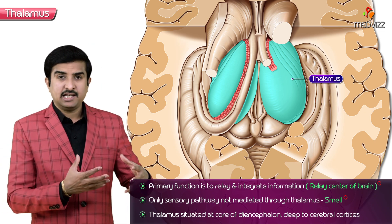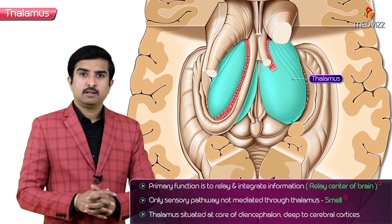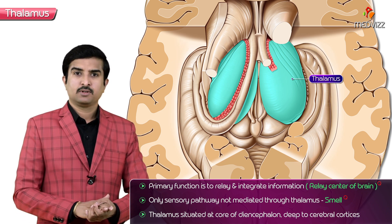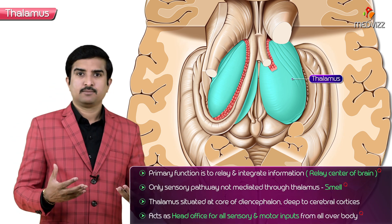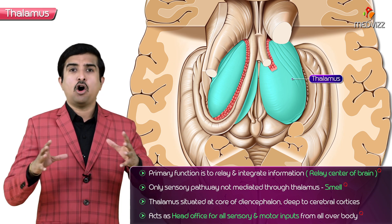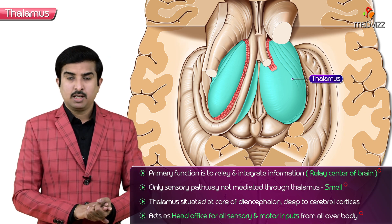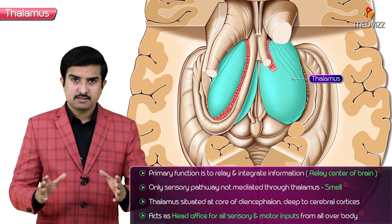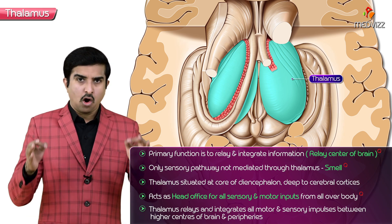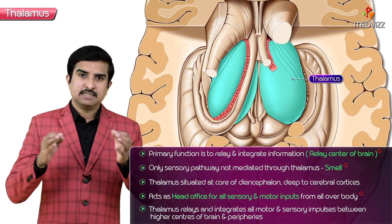Because of this, the location of the thalamus is an ideal anatomical location — it is present in the deeper part of the brain, at the core of the diencephalon and deep to the cerebral cortices. It conveniently acts as a head office for all integration and relay of sensory as well as motor information from all over the body. The thalamus acts as a relay and integration center for all motor and sensory impulses between the higher centers of the brain and the periphery.